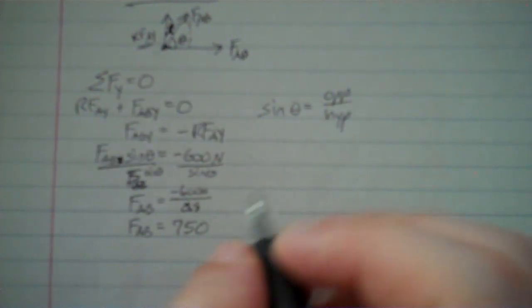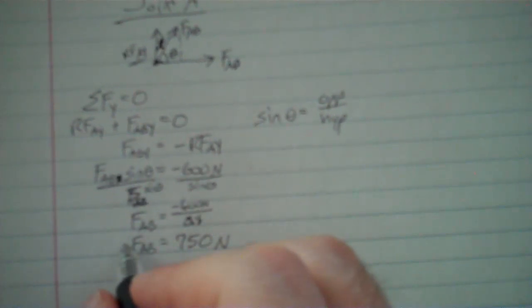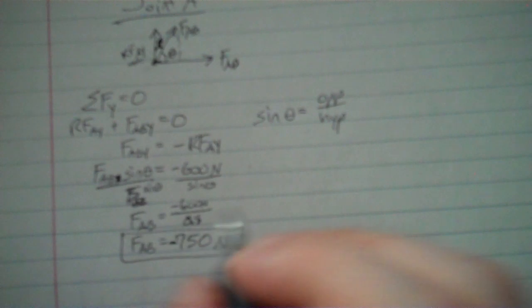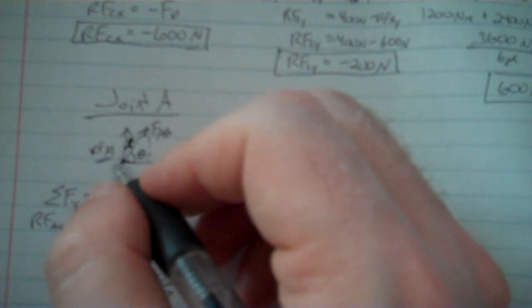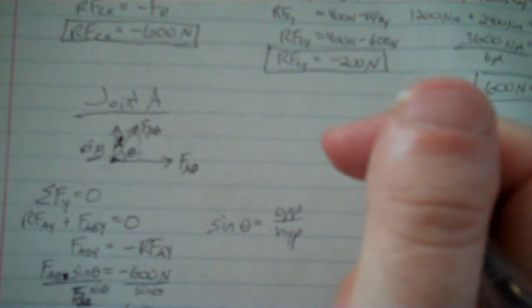But 600 divided by 0.8 gives us 750. So the force in member FAB is 750 newtons, oh, don't forget the negative, the negative, which means it's 750 newtons in compression, because we assumed it to be in tension, but it's actually in compression, so it's not pulling on this joint, it's actually pushing on the joint, because the joint is pushing on that member in compression.